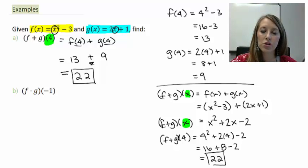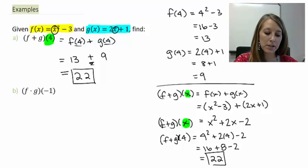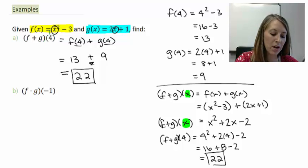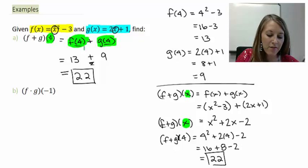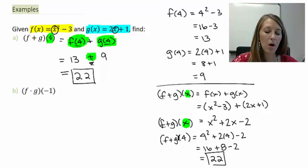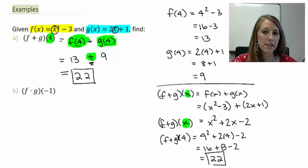You can see there are two routes to take. But if it gives you a number to substitute in, the easier way is to figure out what each function evaluates to at that number, then add them together as your last step. I've shown you how to do Part A in two different ways — I suggest you take that knowledge and apply it to Part B. Pause the video and see what answer you come up with.